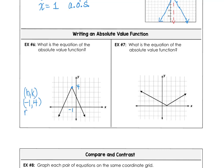The graph has been reflected, so we need a negative on our a value. The slope looks like 2 down 1 right in both directions, so our a value would be negative 2. Putting all of those together, we have y equals negative 2 times the absolute value of x minus negative 1 plus 4.